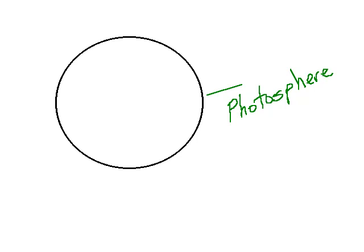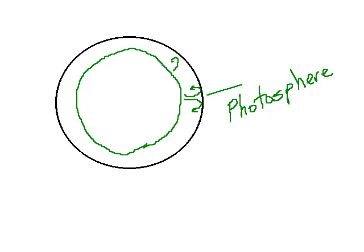Beneath this photosphere — and we have some evidence of this which we'll show you in pictures and videos this week — beneath this layer is another layer. In this region, hot gases are rising and falling back down. This is very similar to the way we get some cloud formations on Earth, where hot air rises, cools, and condenses into those puffy white clouds, usually on a sunny day. This region just beneath the photosphere is referred to as the convection zone, because that's where hot gases are rising up to the photosphere.